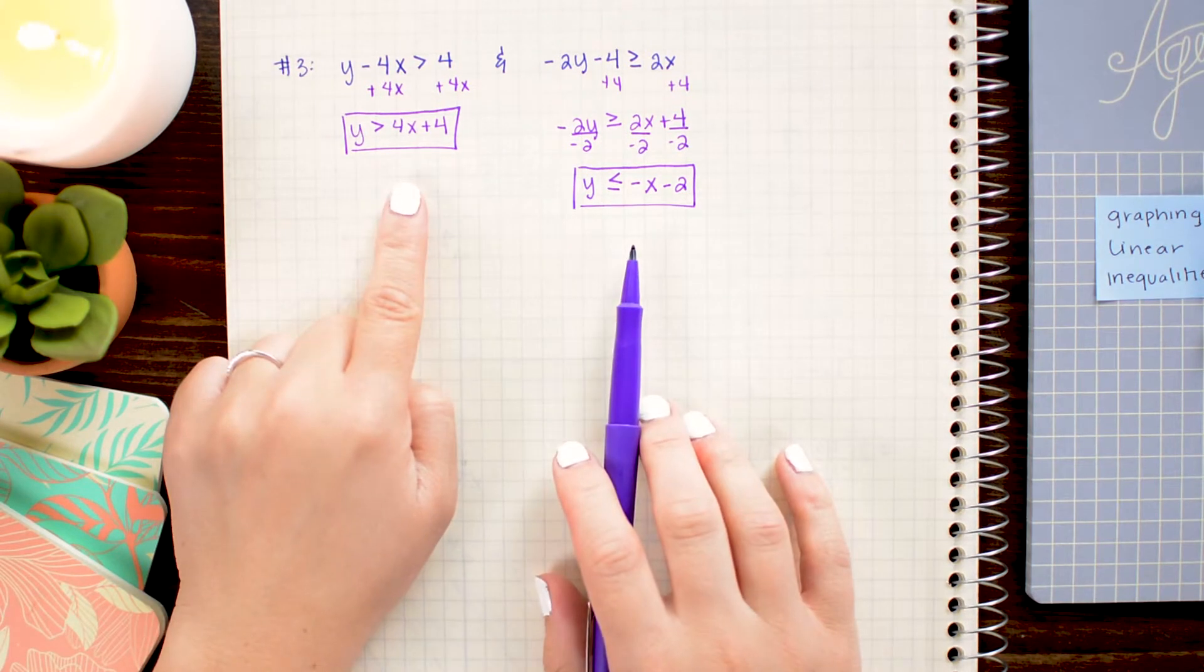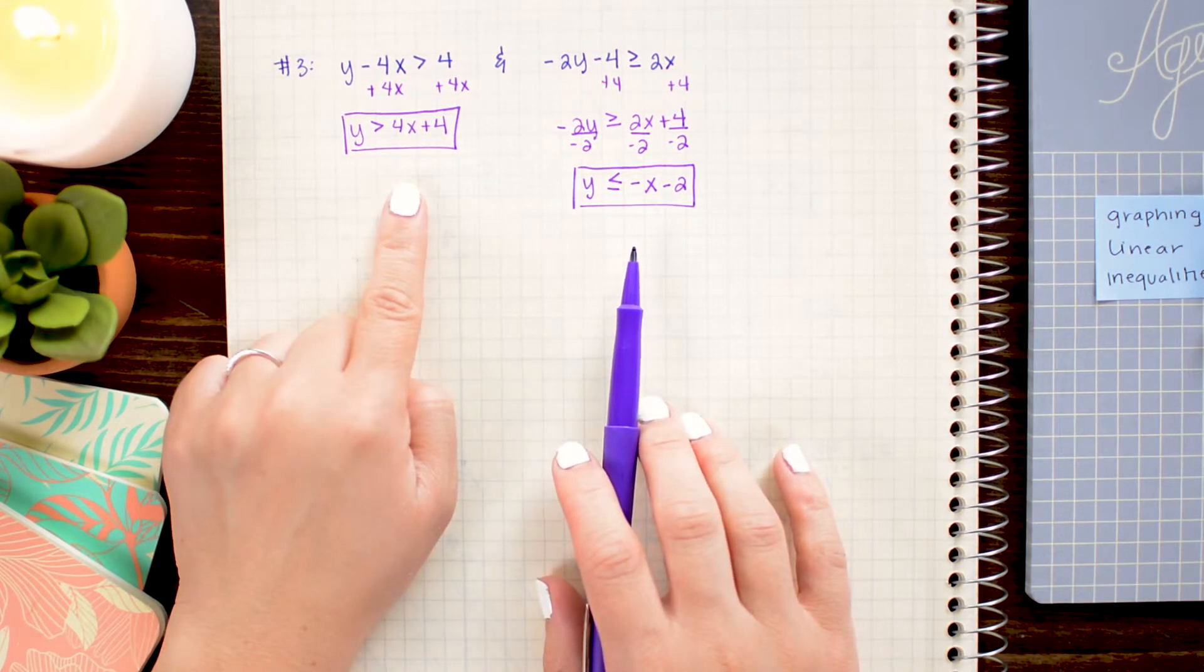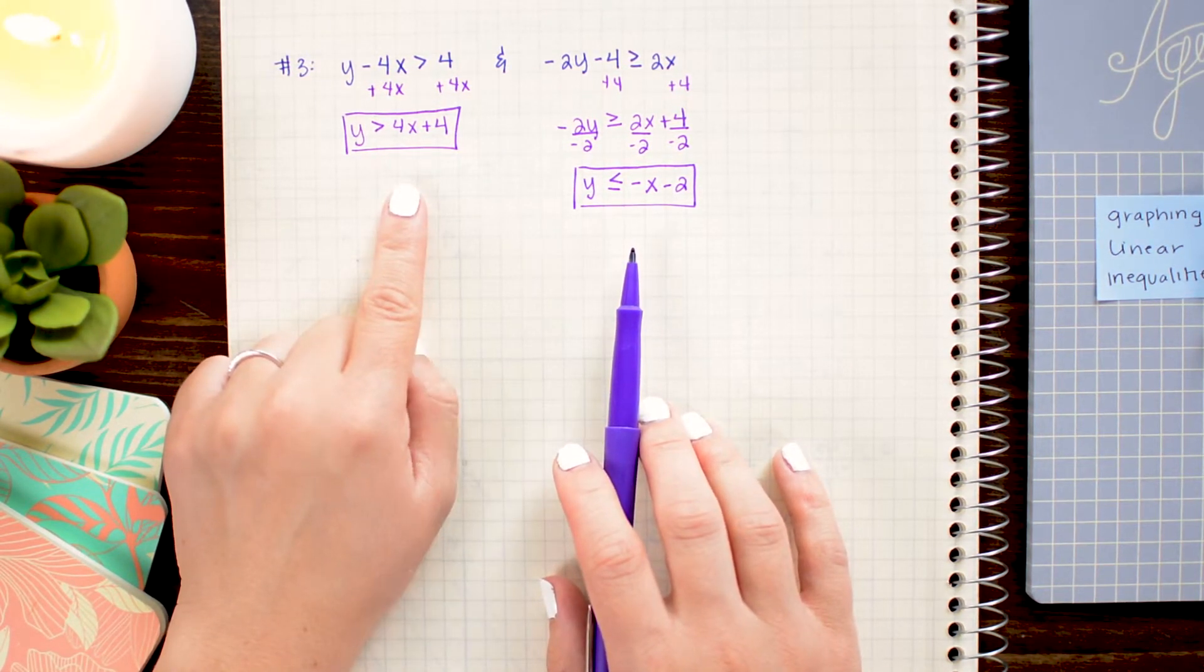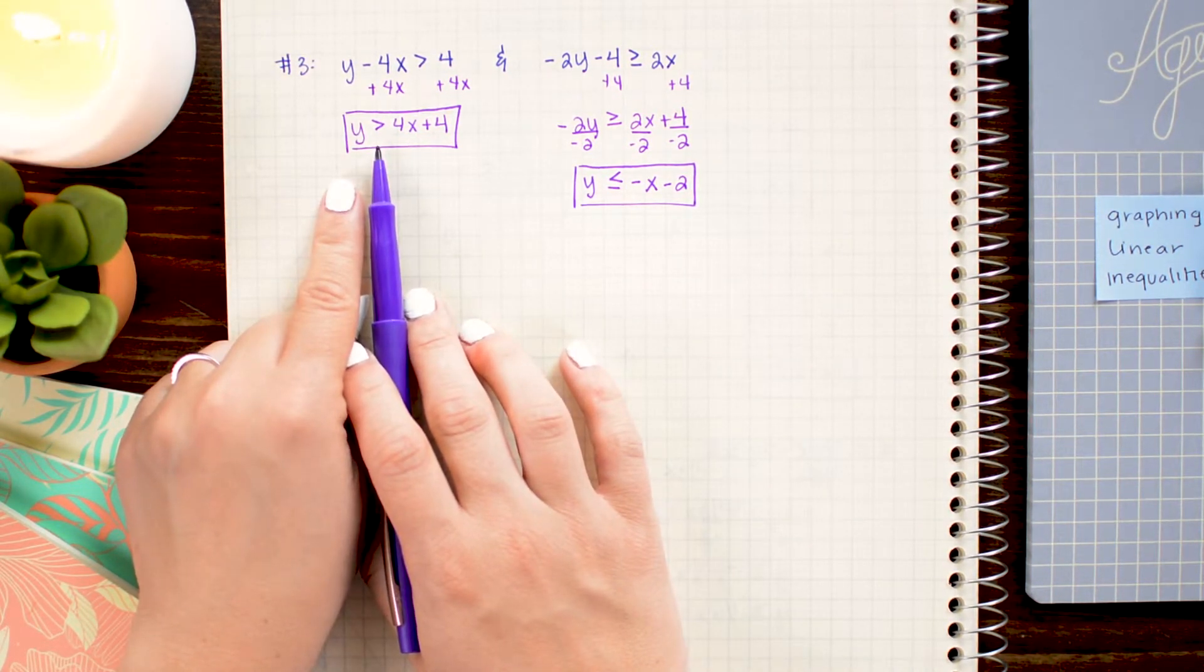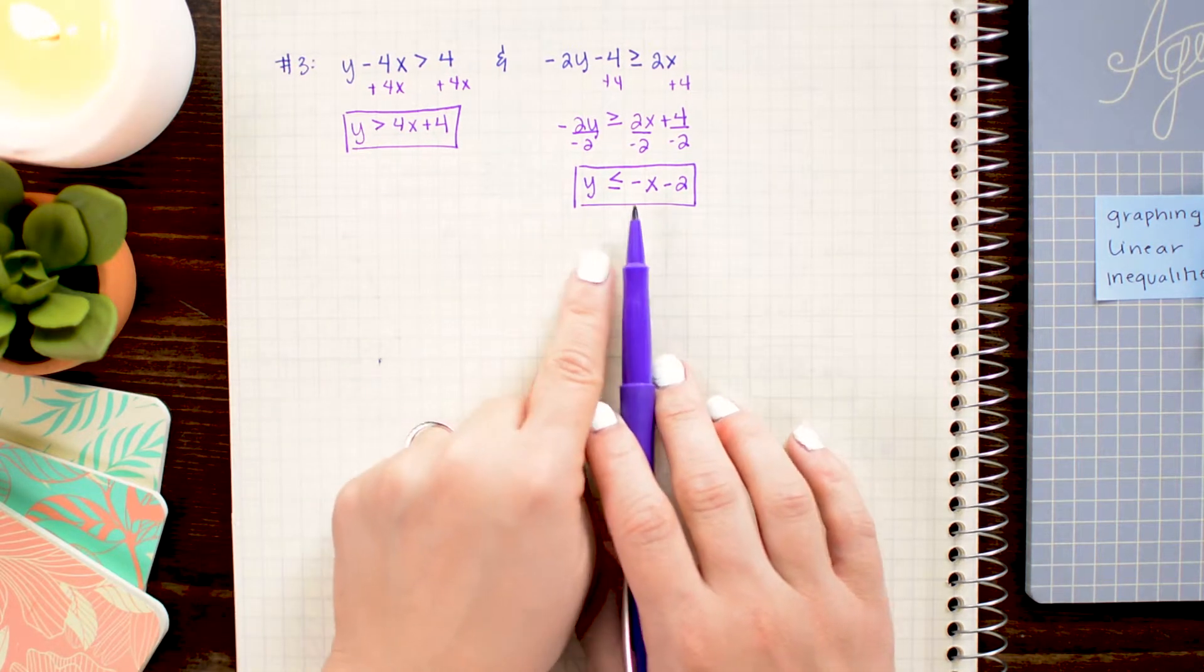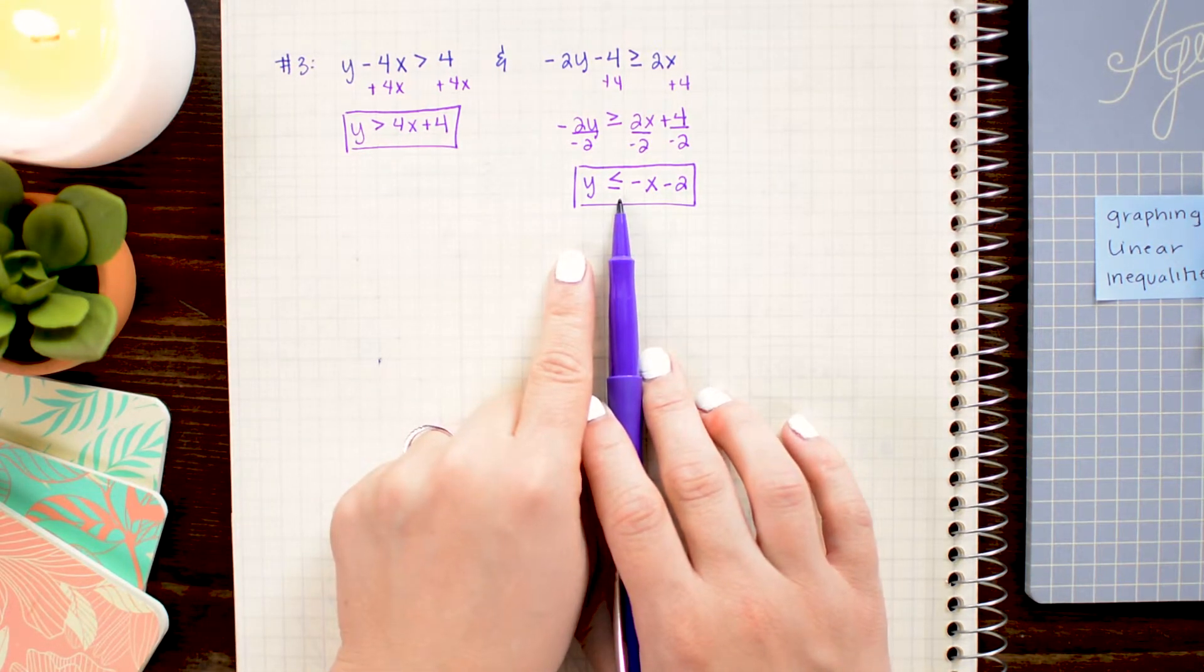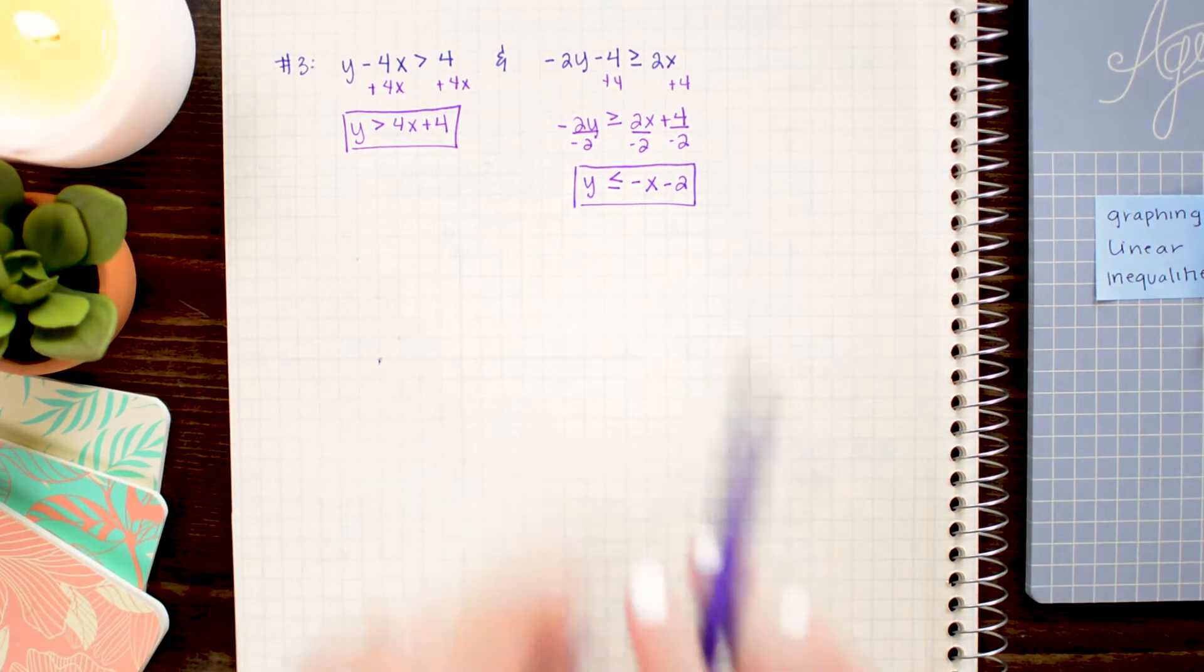The next thing I want to do is plot these two lines on the same xy coordinate axis. Again, remembering that this line, because it doesn't have an equal symbol, will get a dashed line and this one, because it does have the equal to symbol, will get a solid line.